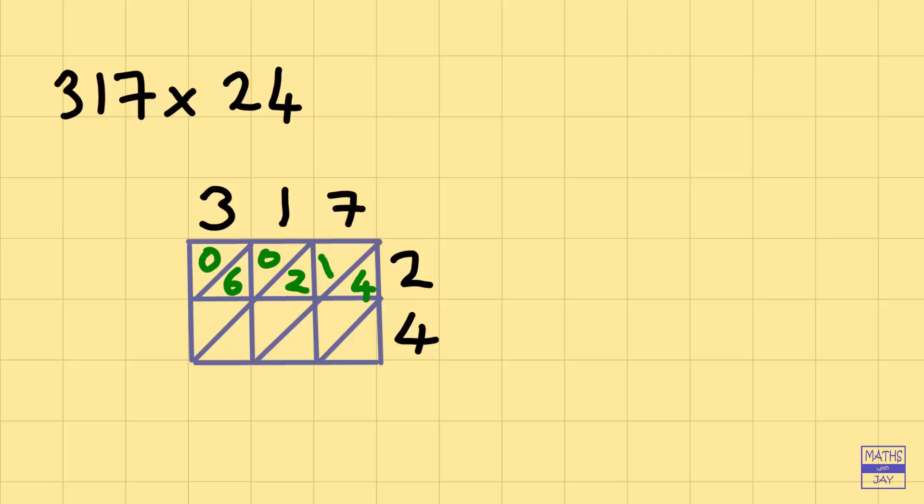And then on to the next row. 3 times 4 is 12, so 1 and 2. 1 times 4 is 4, so 0 and 4. And then 7 times 4, 28, so 2 and 8.